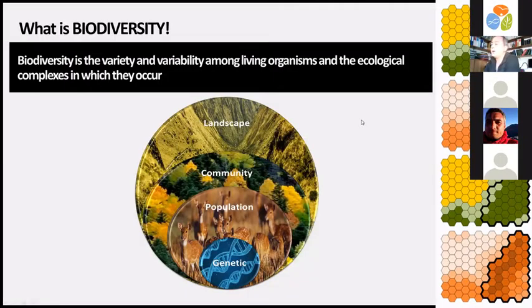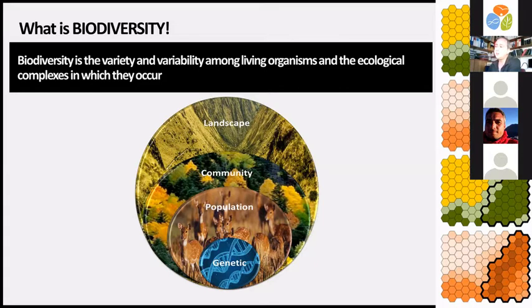As I said before, biodiversity represents the variety and variability among living organisms, as well as the ecological complexes in which they occur. We can distinguish four organized levels: the genetic, population, community, and landscape levels. Each of these levels represents different aspects of diversity.